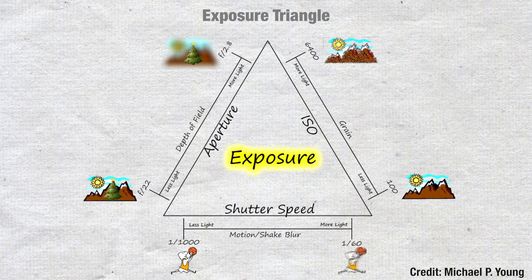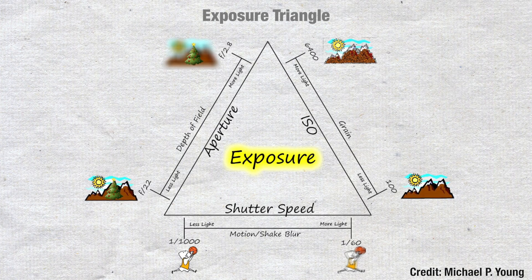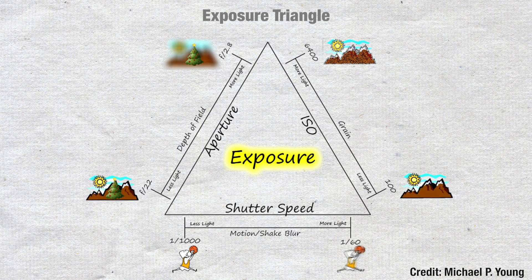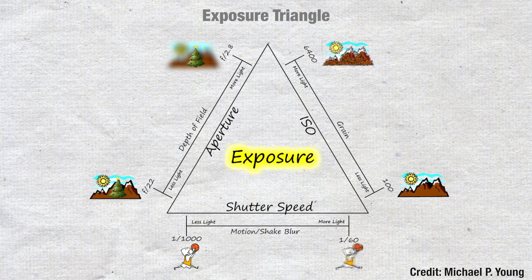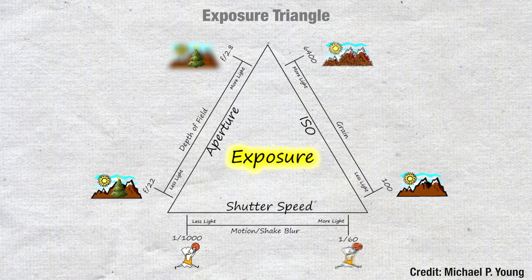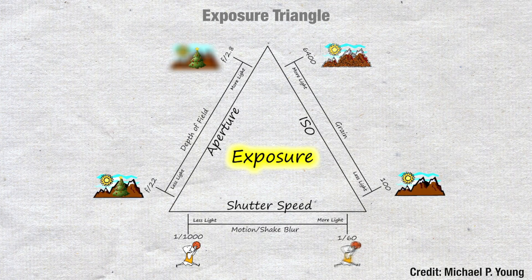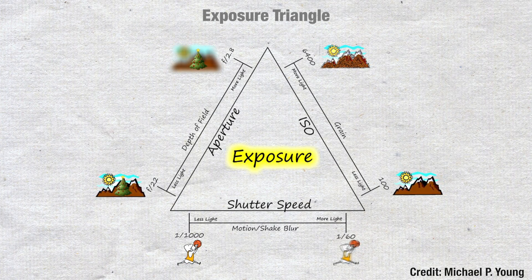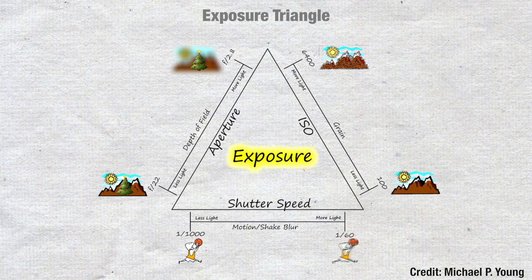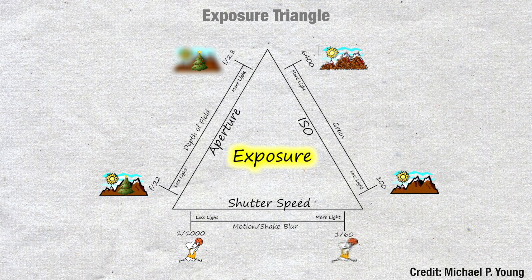Higher ISOs will give you greater exposure, but you'll get more grain in your image. Wider apertures will give you higher exposures with the added effect of a shallow depth of field. And finally, a slow shutter speed will give you higher exposure, but the image will get blurrier the slower the shutter speed.